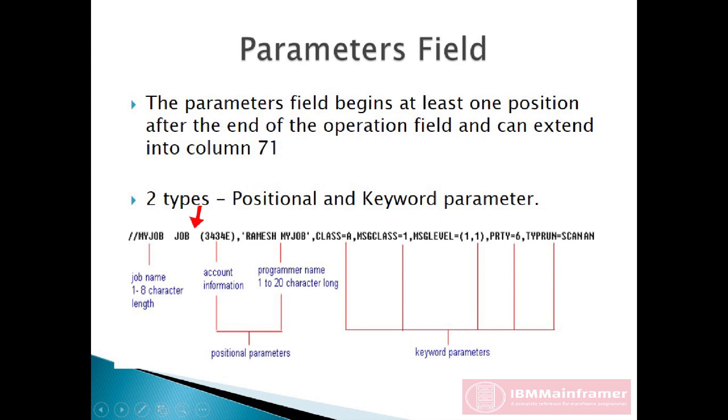So all continued JCL statements must begin before column 17 on any continuation. There are two types of parameters available in JCL.